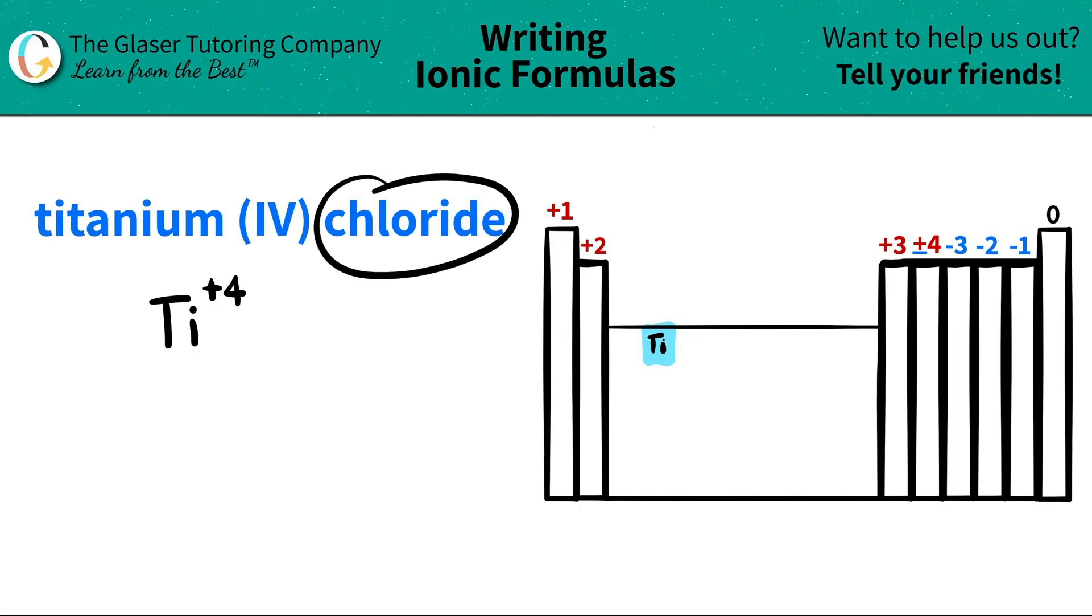Now I'm moving on to the chloride. I see that it has an -ide ending, which means that it's probably going to be a non-metal on the periodic table. I'm looking for that chlor, and I find it, it's over here. This is chlorine.